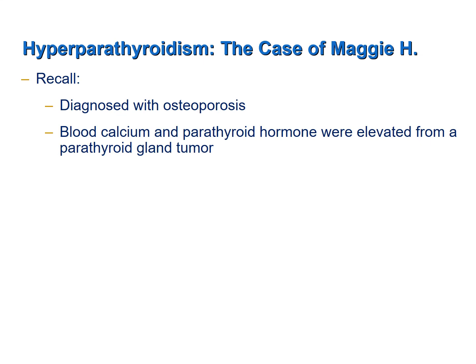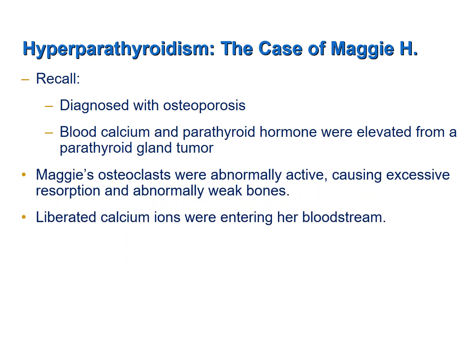At the beginning of the chapter, you were introduced to a case study of Maggie H., a 57-year-old grandmother who maintained a very active lifestyle. One day while running, she fell and suffered several fractures. Upon seeking medical treatment, she was diagnosed with osteoporosis. It was also found that her blood calcium levels and parathyroid hormone levels were elevated due to a parathyroid gland tumor that was releasing excessive levels of parathyroid hormone, putting her osteoclasts on overdrive and causing excessive bone resorption — responsible for her osteoporosis and abnormally weak bones.